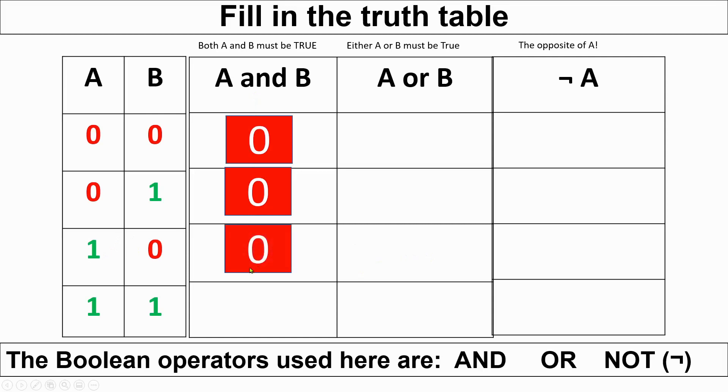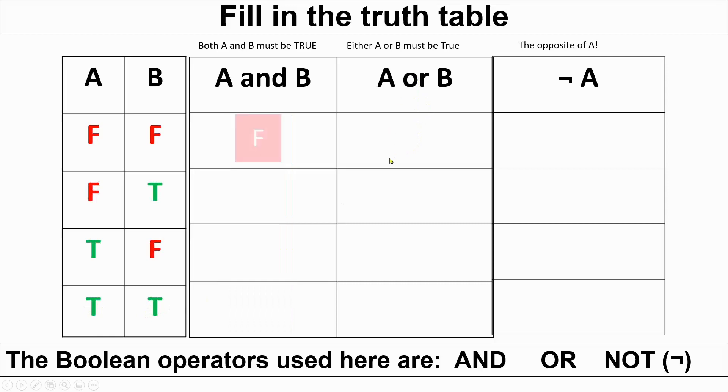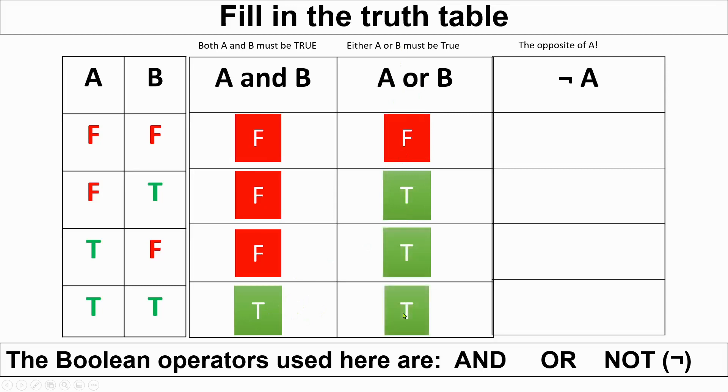So if we fill in this AND gate, you can see that in all these cases it would be zero, and finally you have an input of one and a one, and you finally get a one. Now in an OR gate, that would be zero. You could also put it in as false or true. And then finally we have this notation here, which means NOT, and it's basically the opposite of A. So if A was false, that would be true. The Boolean operators used here are AND, OR, and NOT.